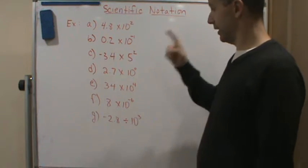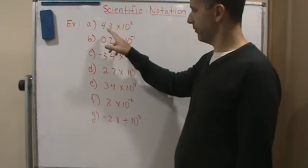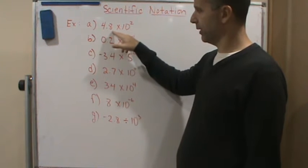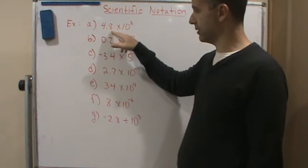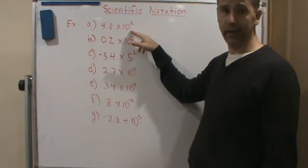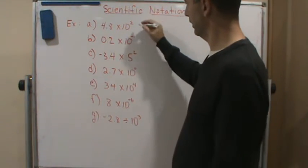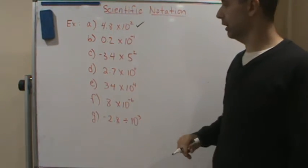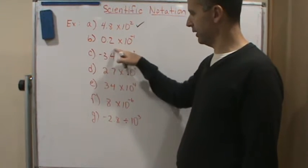So the first one: is the first factor a number between one and ten? The answer is yes. Is the second factor a power of ten? The answer is yes. Therefore it is in scientific notation — check.